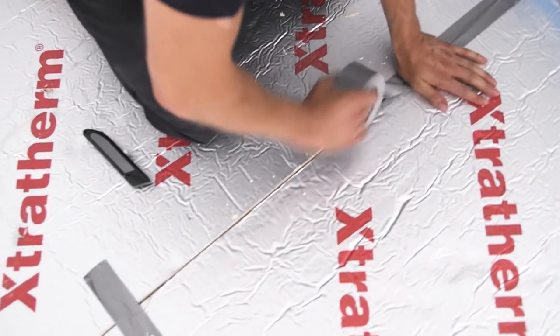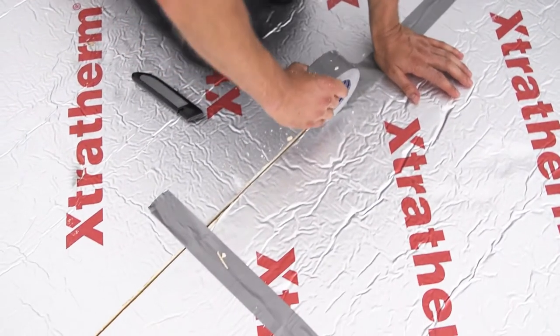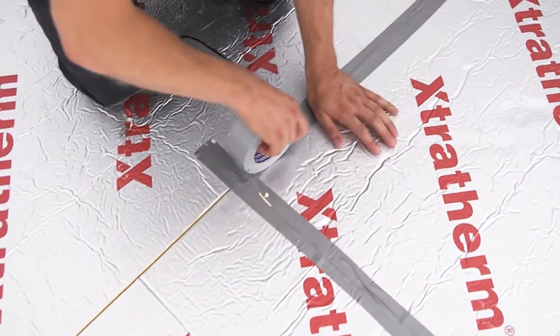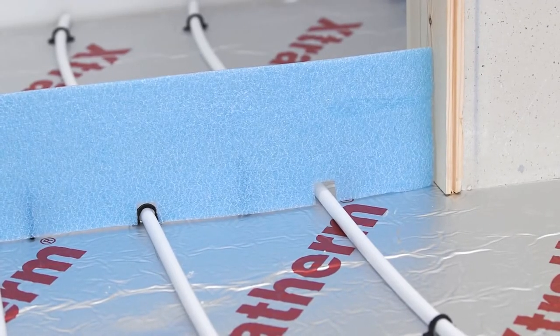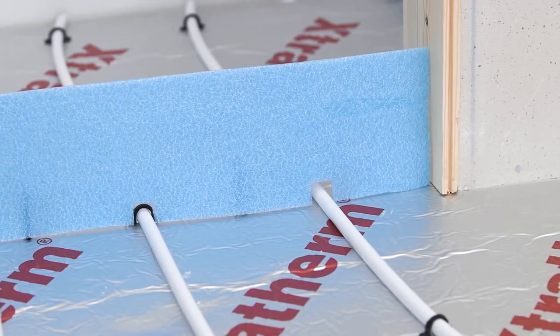The joints must then be securely taped over. Extra expansion joints may also be required at doorways and large floor areas.